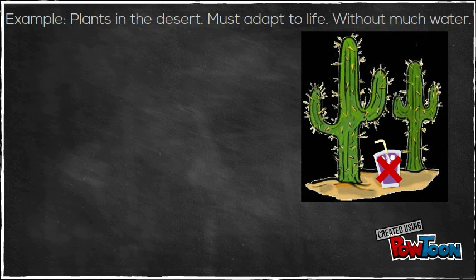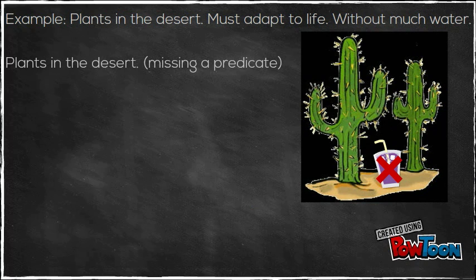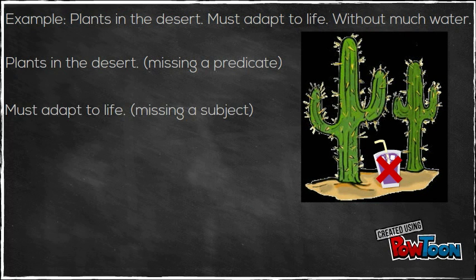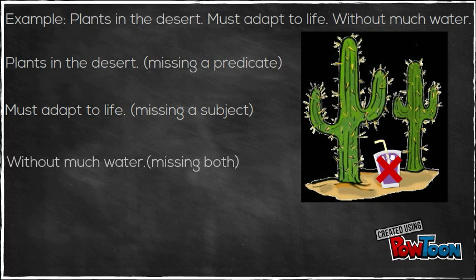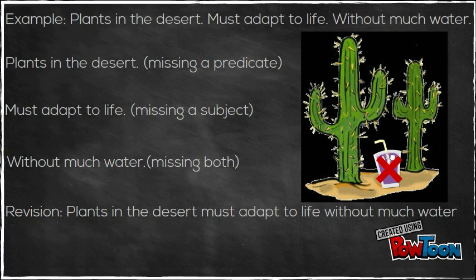Example: 'Plants in the desert must adapt a life without much water.' Fragments include: 'Plants in the desert' — missing a predicate; 'Must adapt a life' — missing a subject; 'Without much water' — missing both. Revision: 'Plants in the desert must adapt a life without much water.'